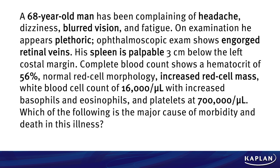Is it normal to palpate the spleen? Absolutely not — we know something wrong is going on with this guy. So we got a CBC. It shows a hematocrit of 56% — everybody should know that's elevated, really high. Normal red cell morphology but an increased red cell mass. Not only do we have all this going on with the RBCs, we've got an increased white count at 16,000, more basophils and eosinophils, and platelets really high at 700,000. So red blood cells, white blood cells, and platelets are all up.